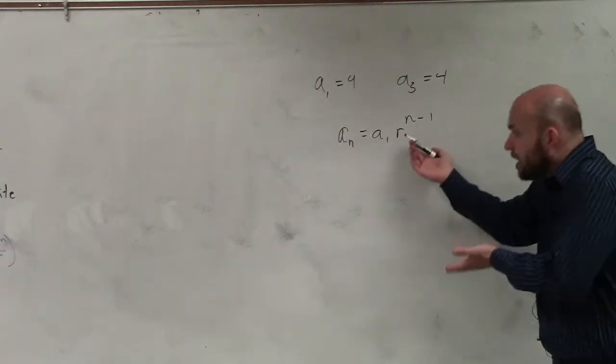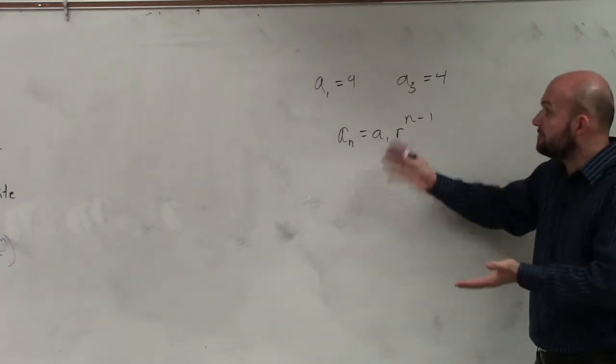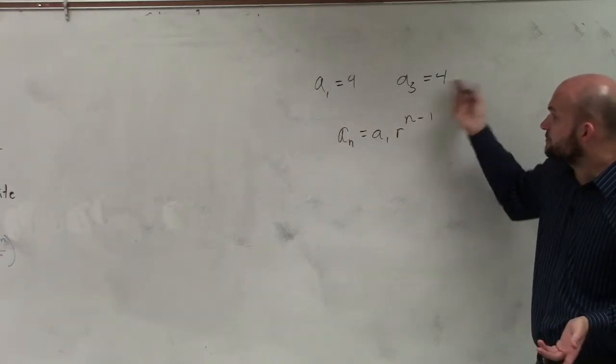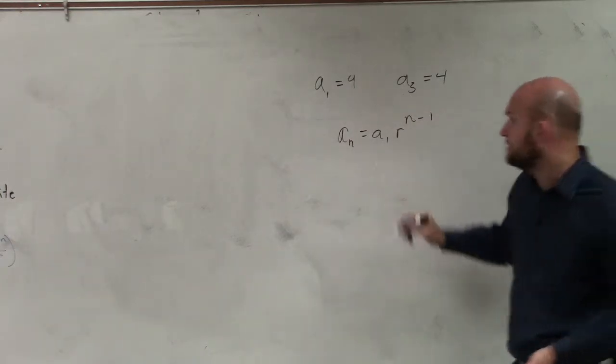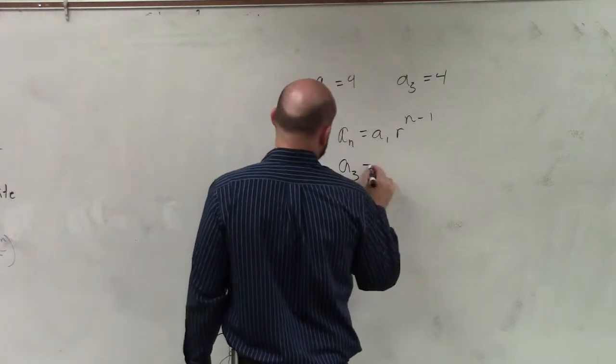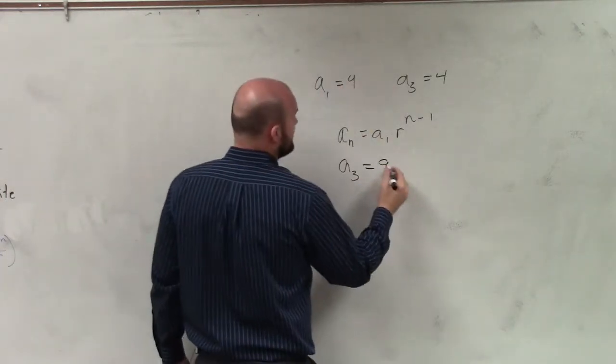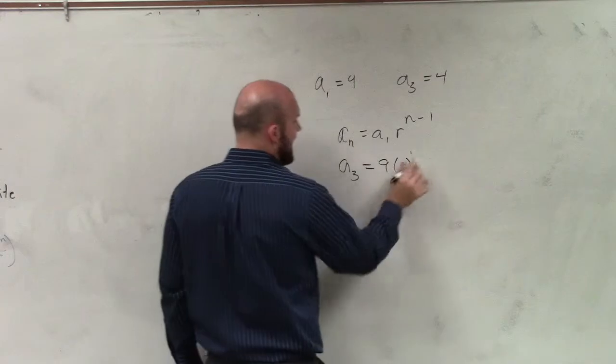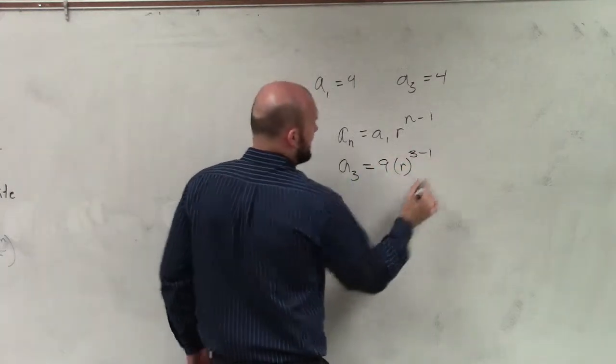Now, we don't know what r is, so let's plug in the values. We know a sub 1 is 9. We can say a sub 3 is going to represent our n. Therefore, a sub 3 equals a sub 1, which is 9, times r raised to the n, which is 3, minus 1.